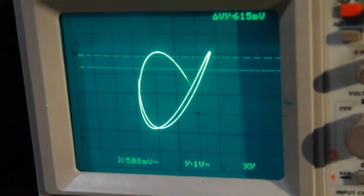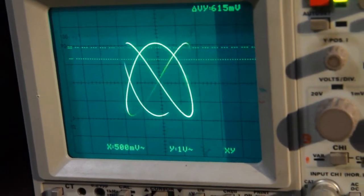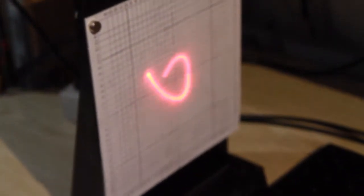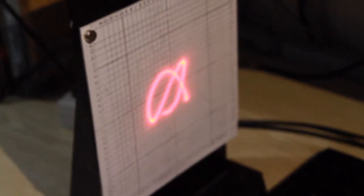The oscilloscope shows the superimposed control X and Y signals. The broken trace is an artifact of camera frame rate interference.